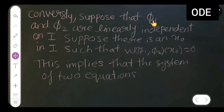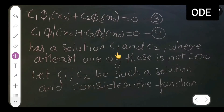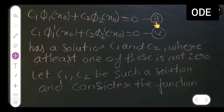For the converse part, suppose that phi 1 and phi 2 are linearly independent on I. Suppose there is a point x₀ in I such that the Wronskian W(phi 1, phi 2)(x₀) = 0. This implies a system of two equations: c1·phi 1(x₀) + c2·phi 2(x₀) = 0 — call this equation (3).